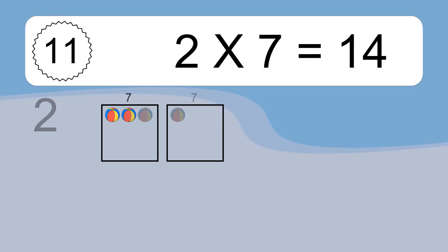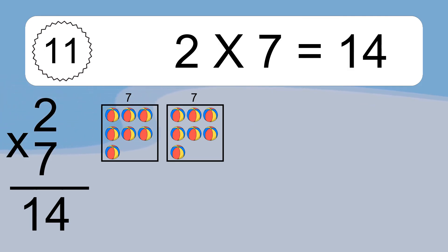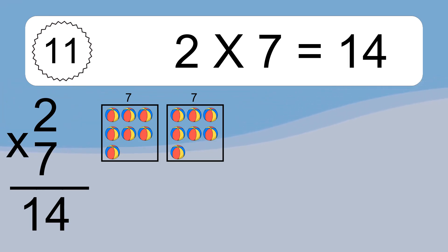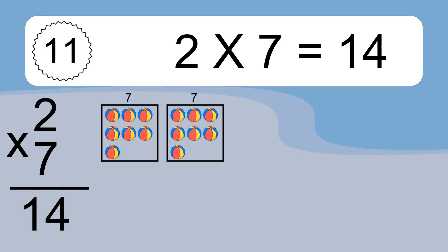Two times seven equals what? Two times seven equals fourteen. We have two boxes, and each box has seven colorful balls inside. If you count all the balls in all the boxes together, you will have two times seven balls. This equals fourteen balls.